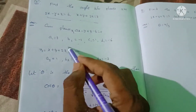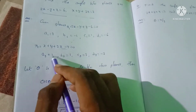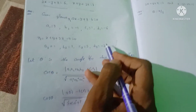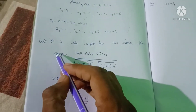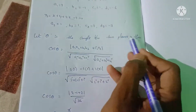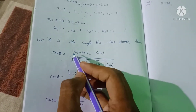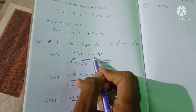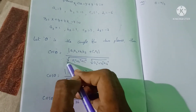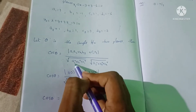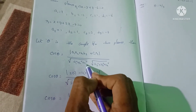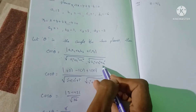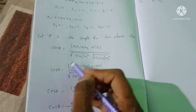So we have a1, b1, c1, d1 and a2, b2, c2, d2. The formula: let theta be the angle between the two planes. Then cos θ = |a1·a2 + b1·b2 + c1·c2| divided by √(a1² + b1² + c1²) · √(a2² + b2² + c2²).